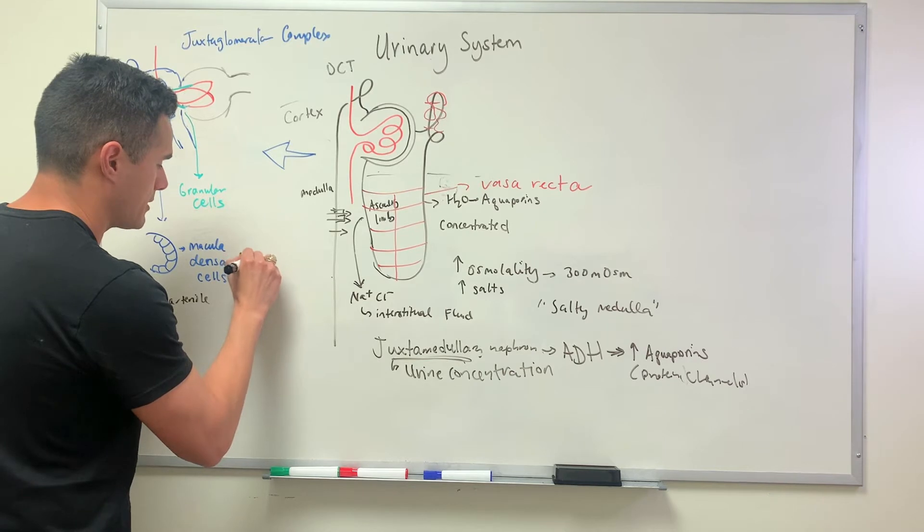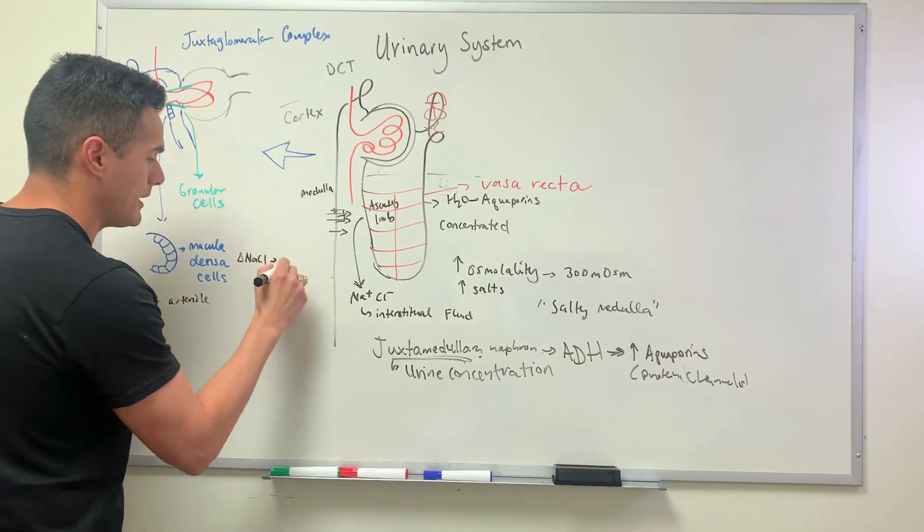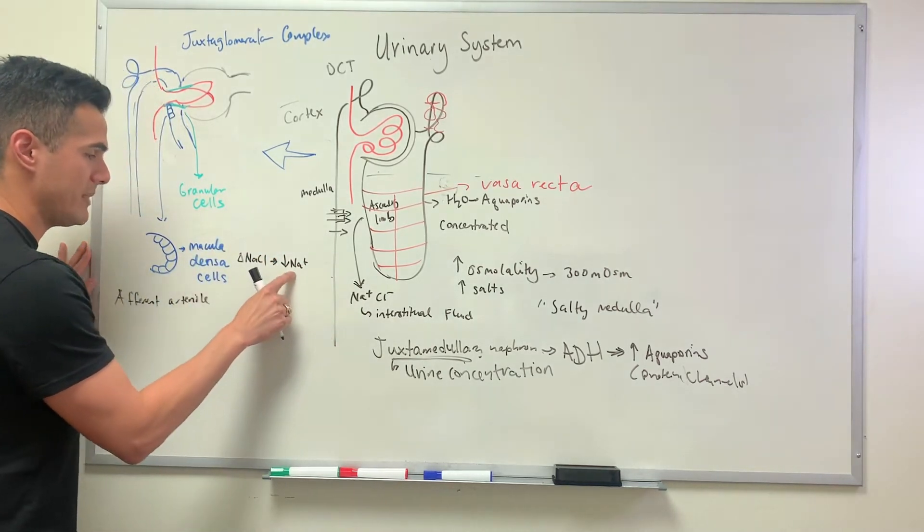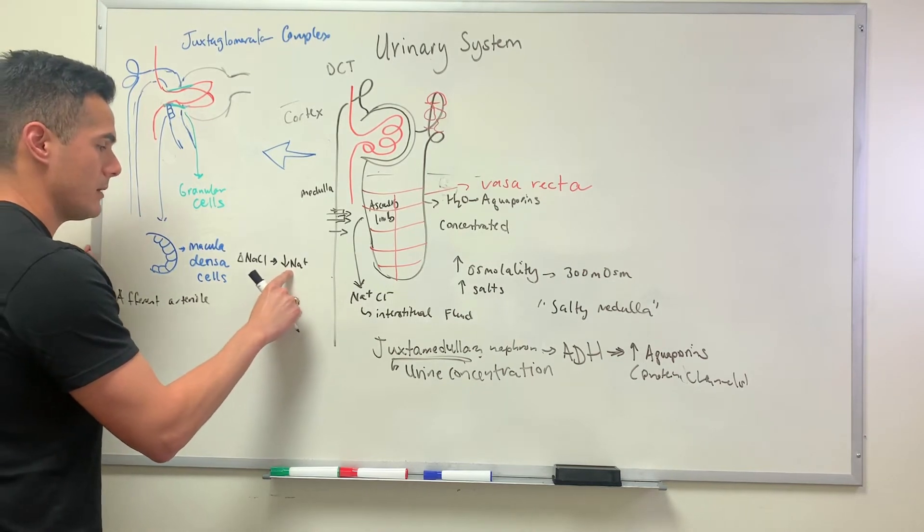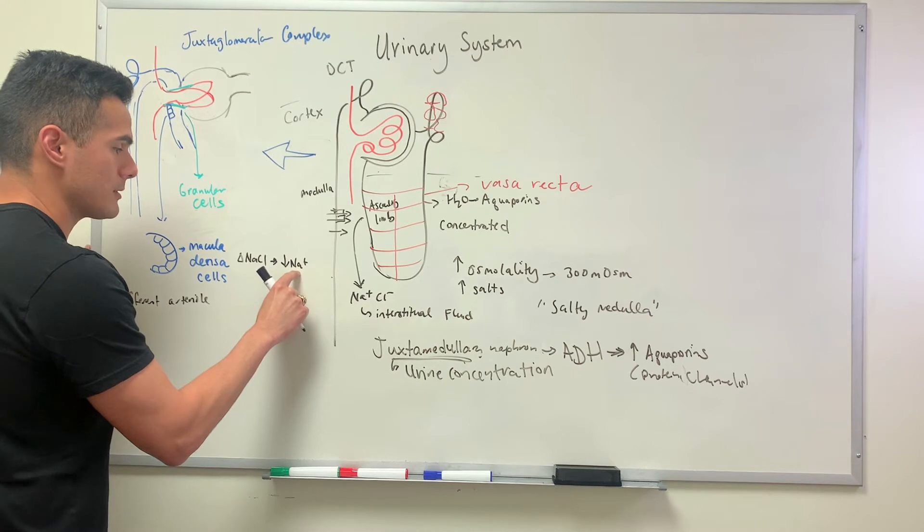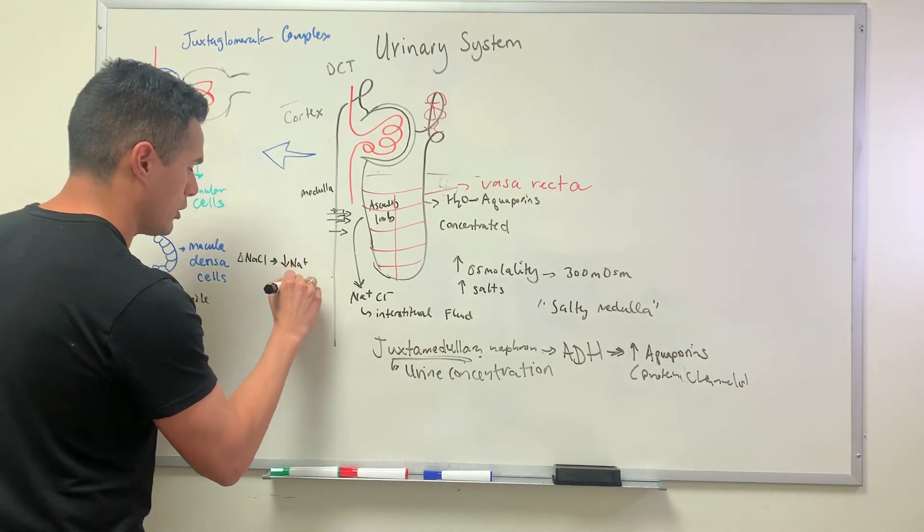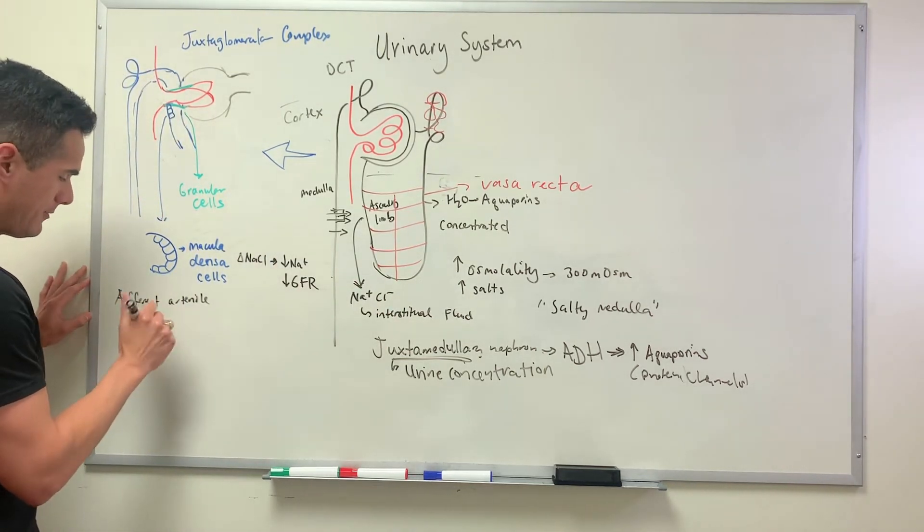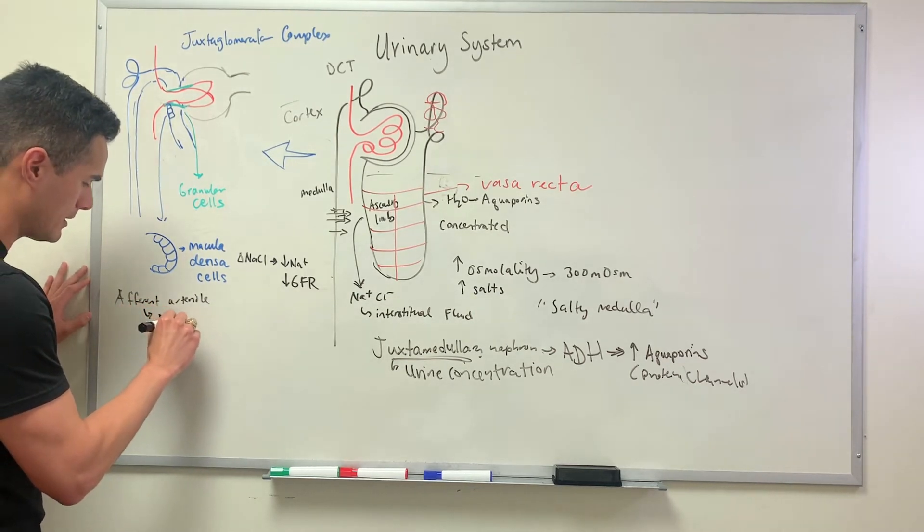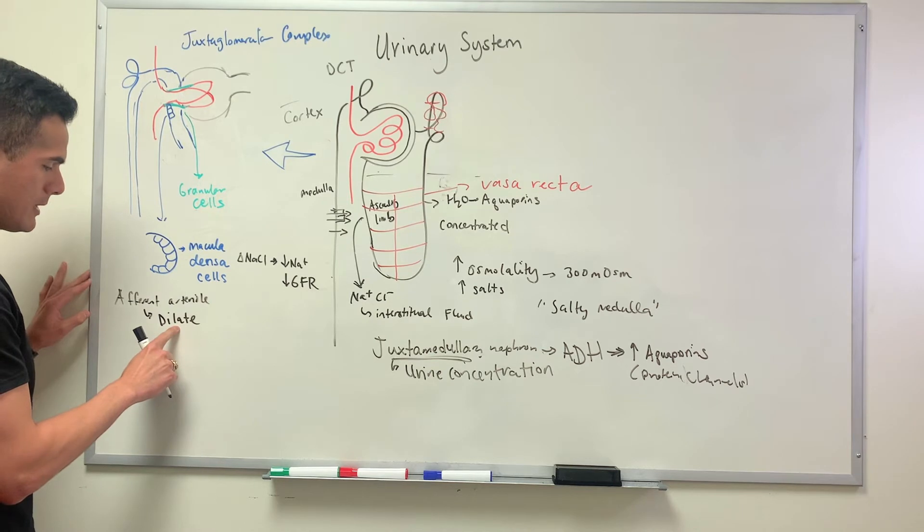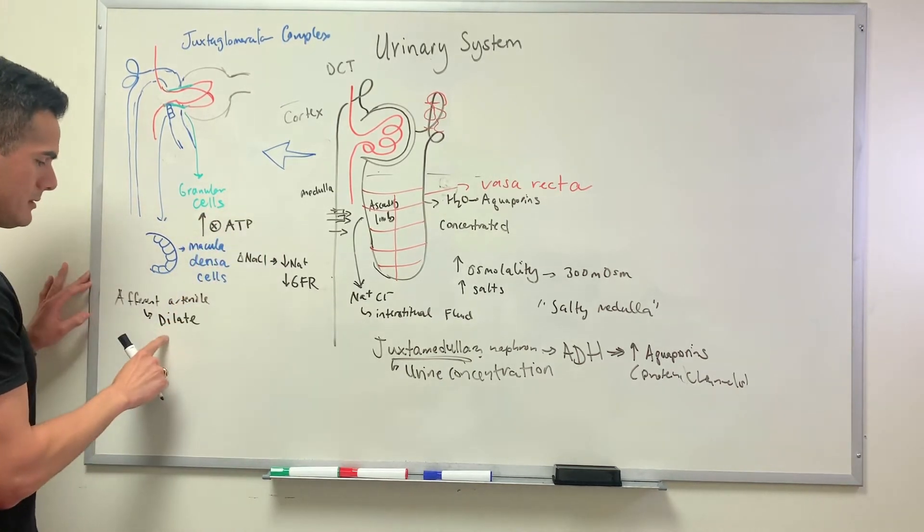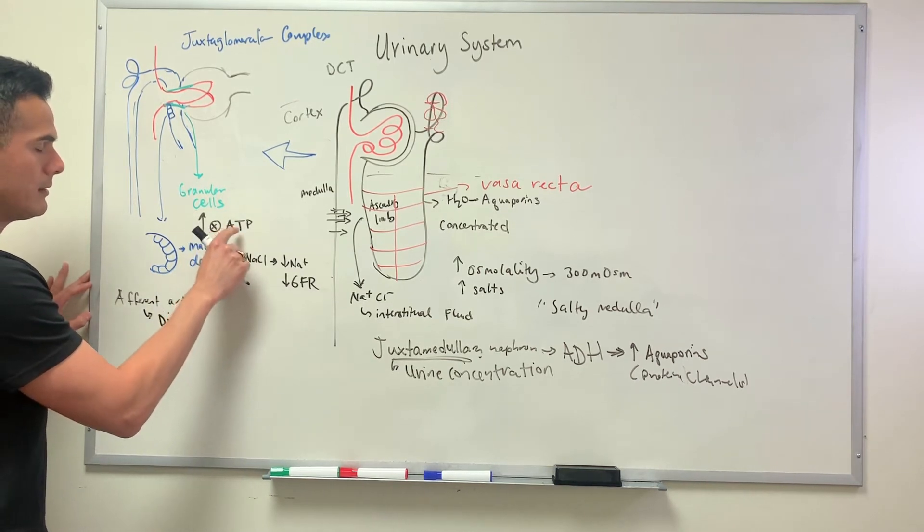The macular densa detects the changes in salt. Whenever there is a low salt concentration, for instance when we're dehydrated, that means there's low glomerular filtration because there's less fluid getting through. What's going to happen to the diameter of the afferent arteriole? It's going to dilate through the inhibition of ATP.